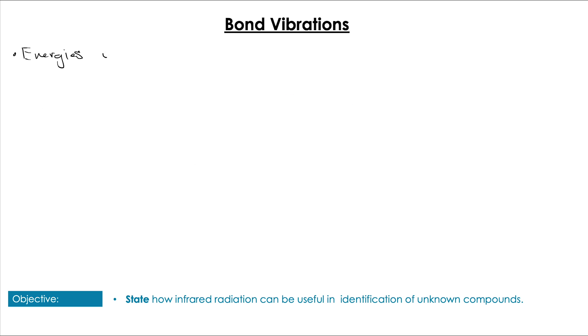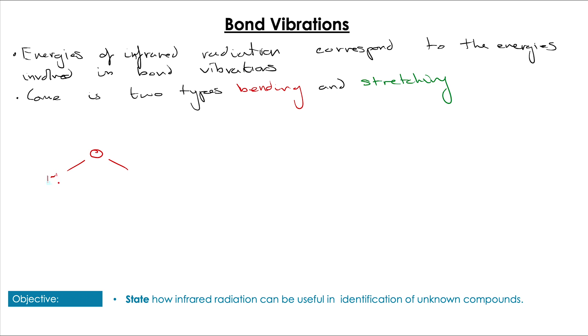The energy absorbed by the bonds in the molecule causes vibrations and because each of these vibrations are different in each bond they give a characteristic vibration. They come in two main types. These are bending and stretching.